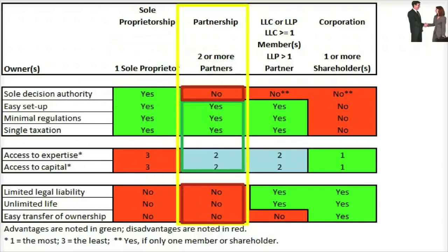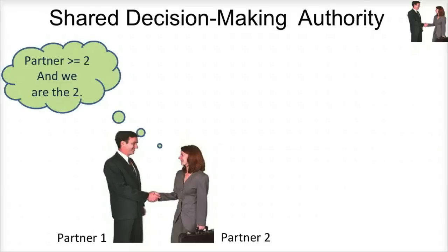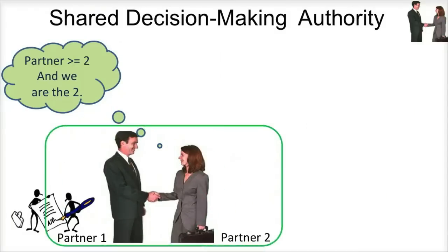You should use the Summary of Business Structures table to guide you as you learn more about partnerships. Shared Decision-Making Authority. Partnerships have two or more owners, i.e. partners, that share decision-making authority. A single partner has the legal ability to enter contracts and sign agreements that obligate all the partners in the partnership.